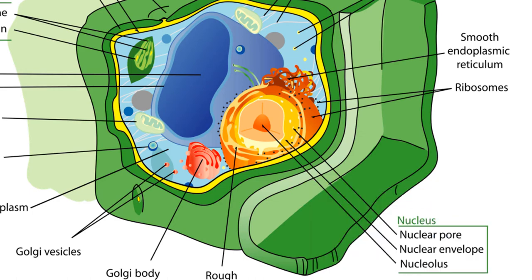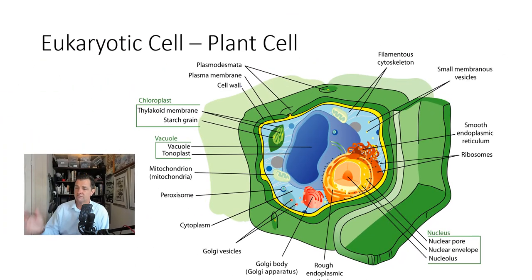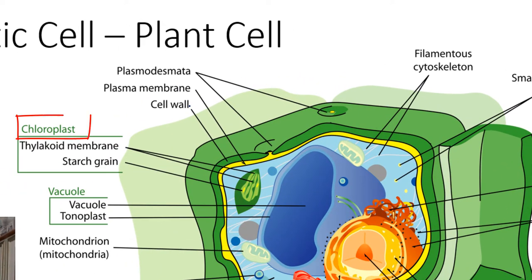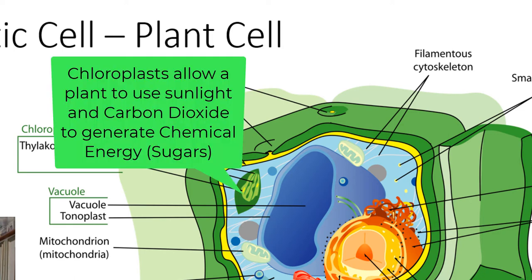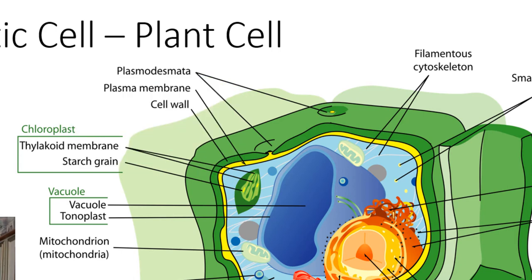But plants have some other important organelles that we don't find in animals. Plants have this special organelle called a chloroplast. Chloroplasts function in a similar way to mitochondria with one big exception. The chloroplast utilize energy from the sun and carbon dioxide. They take the energy from the sun and the carbon dioxide molecules, and they generate chemical energy by combining those two.